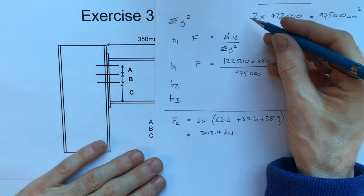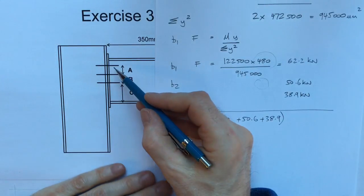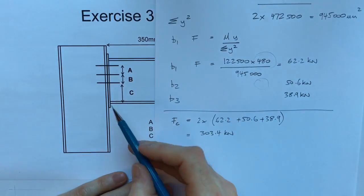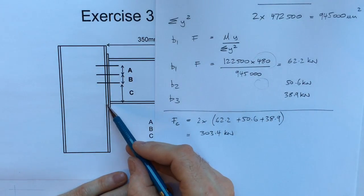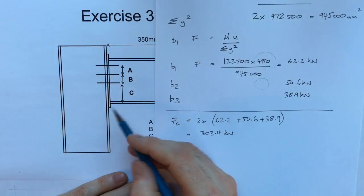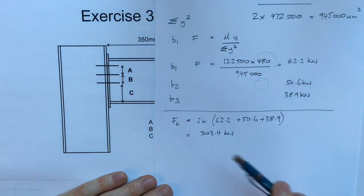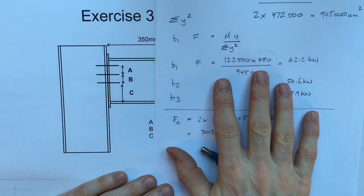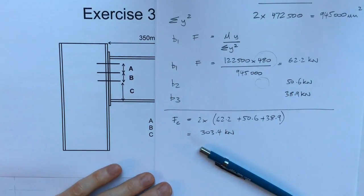So in a very short space of time I've worked out the tension force in each of the bolts and the compression force which may cause local buckling or buckling of the web in the column, and I can design my welds accordingly. That's the end of that, I hope you found it helpful.